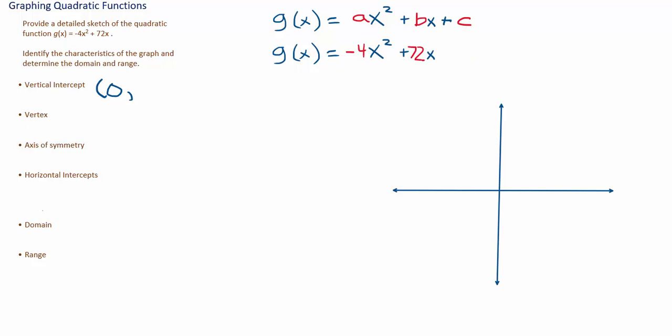So when c is 0, we have a special case that our vertical intercept is the same as our horizontal intercept, because notice if you were to plot (0, 0) on the graph, that point is where the graph is going to cross both the horizontal axis as well as the vertical. So I have one more horizontal intercept to find. Before I do so, I'm first going to find the vertex.